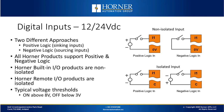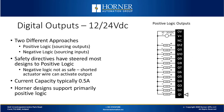On the digital output side, there are two different approaches. You've got positive logic, where you're providing the positive voltage to the actuator and then the actuator is connected externally to common. With negative logic, it's the opposite — the output module is providing the negative lead and the positive lead is coming externally. Our designs at Horner primarily support positive logic, and the current capacity is almost always about half an amp.